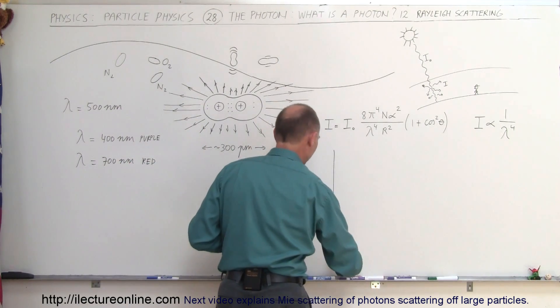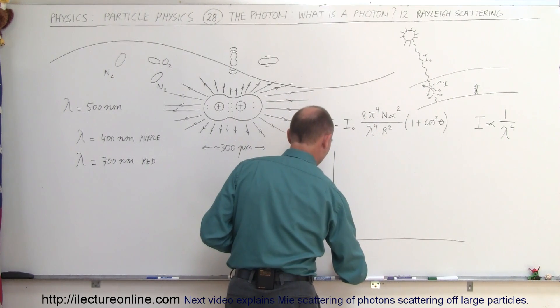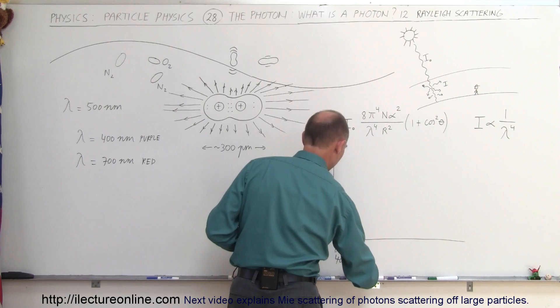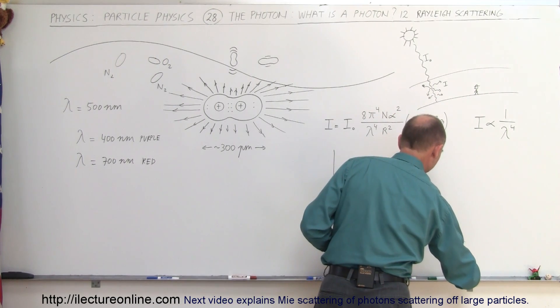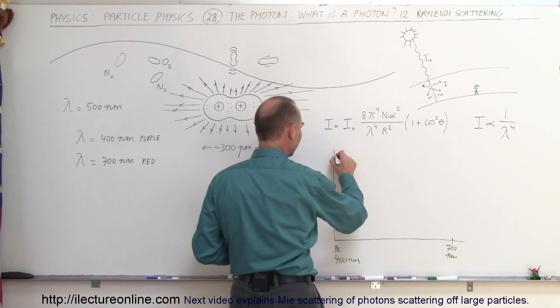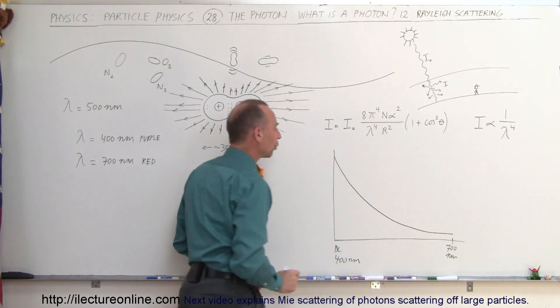If you draw a little chart of that, and so you say this is blue light at 400 nanometers or purple light at 400 nanometers and this is red light at 700 nanometers, the amount of light getting scattered out will vary like that according to wavelength.